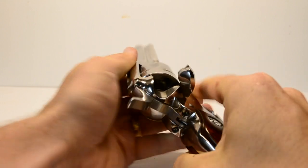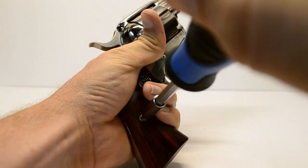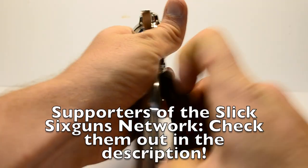First, open the loading gate and ensure that the weapon is not loaded. Remove the grip panel screw and then remove the grip panels.